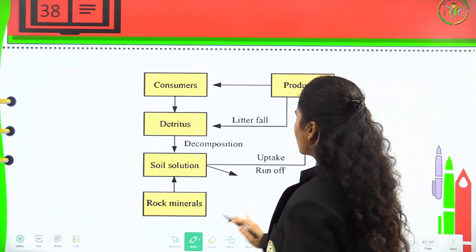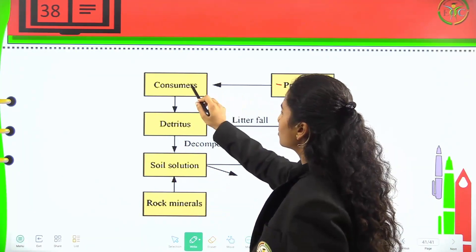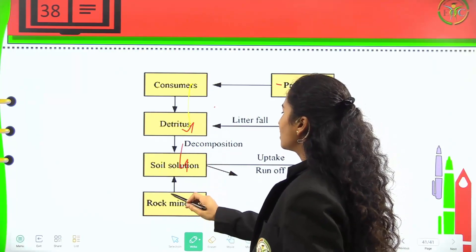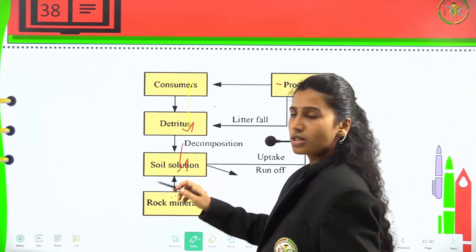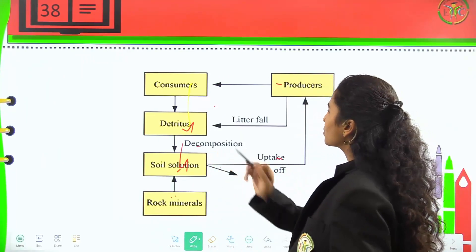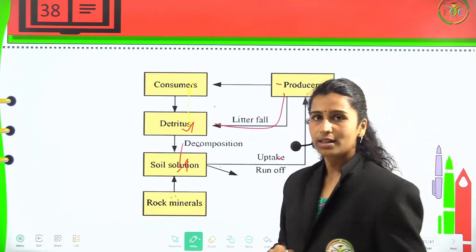This is how the cycle goes on: from rock minerals to soil solution, then to producers, then to consumers, then to detritus and soil solution. Uptake or runoff takes place, decomposition occurs, and litter fall happens in it.